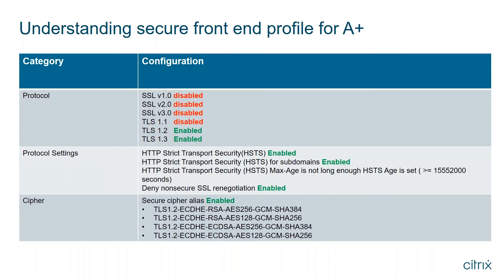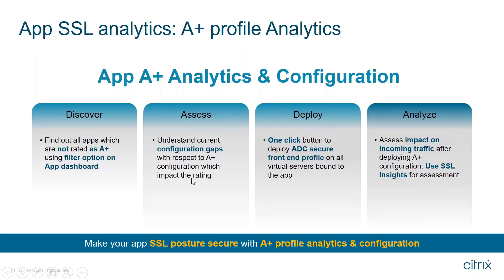With ADM, you can configure the secure front-end profile in a unified way and make all applications A+ from one console. The secure front-end profile for A+ requires: disabling older protocols, enabling newer TLS protocols, enabling HSTS with a specific age, disabling non-secure SSL renegotiation, and binding one of the four ADC cipher aliases to your application. ADM helps you discover all apps that are not A+, understand current configuration gaps, provides a one-click deploy option to make your application A+, and lets you assess the impact using SSL insights.